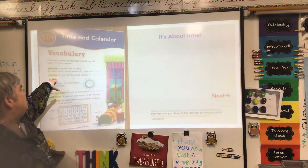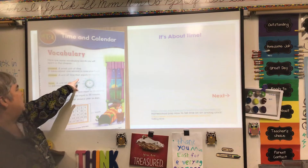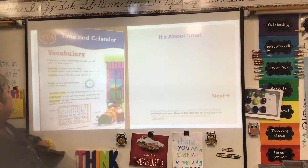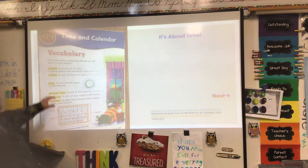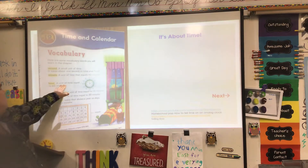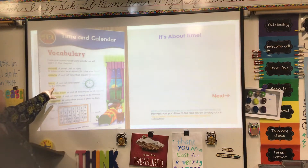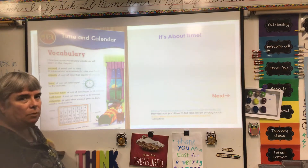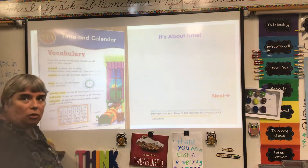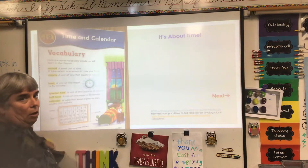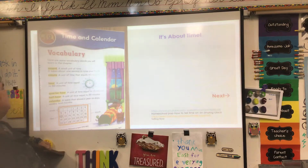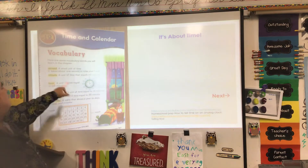We're going to talk about a minute. A minute is a unit of time that requires 60 seconds. And then we're going to talk about an hour. An hour is a unit of time equal to 60 minutes. And we're going to be using those terms a lot when we're talking about the special clock we use — that's an analog clock that is a circle. It means it has to go all the way around, right? Because there are 60 minutes in an hour.